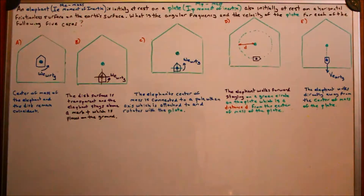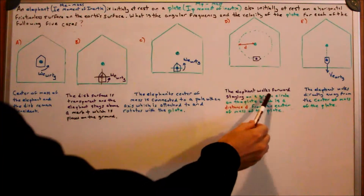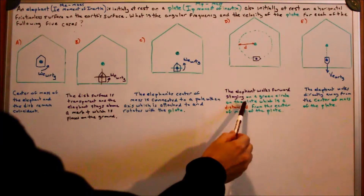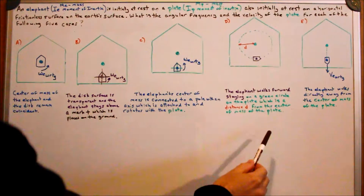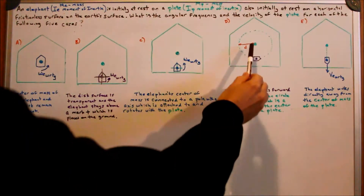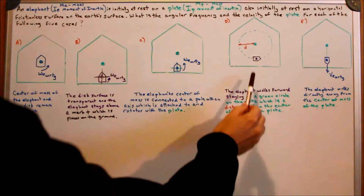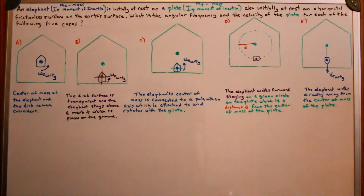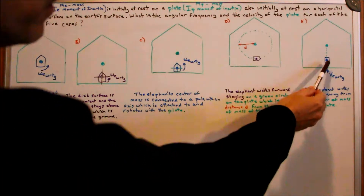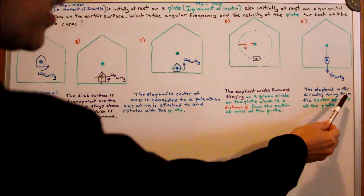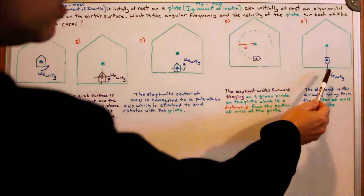Case D: the elephant walks forward, staying on a green circle on the plate which is distance d from the center of mass of the plate. And Case E: the elephant walks directly away from the center of mass of the plate.